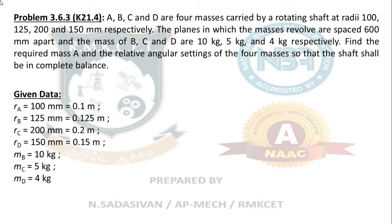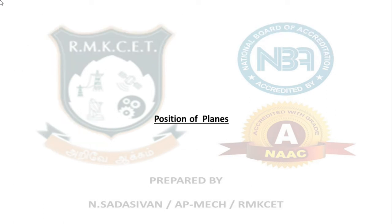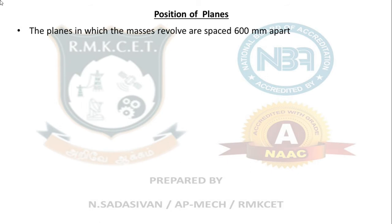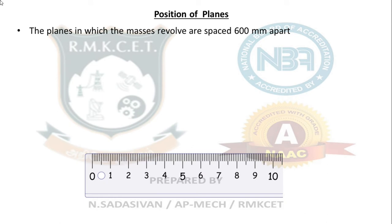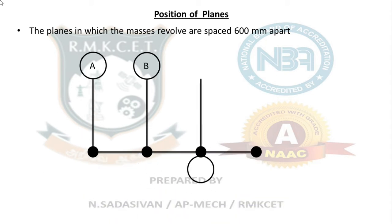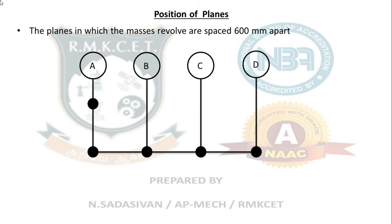Given data: Plane A is declared as the reference plane — mass is unknown (MA), radius of rotation 0.1 m. Plane B: mass 10 kg, radius 0.125 m. Plane C: 5 kg, radius 0.200 m. Plane D: 4 kg, radius 0.15 m. The planes are spaced 600 mm apart; I am taking A as the reference plane. The position of planes: scaling down 20 times, so 600 mm is written as 30 mm. Arrangement is A, B, C, D each 600 mm apart.